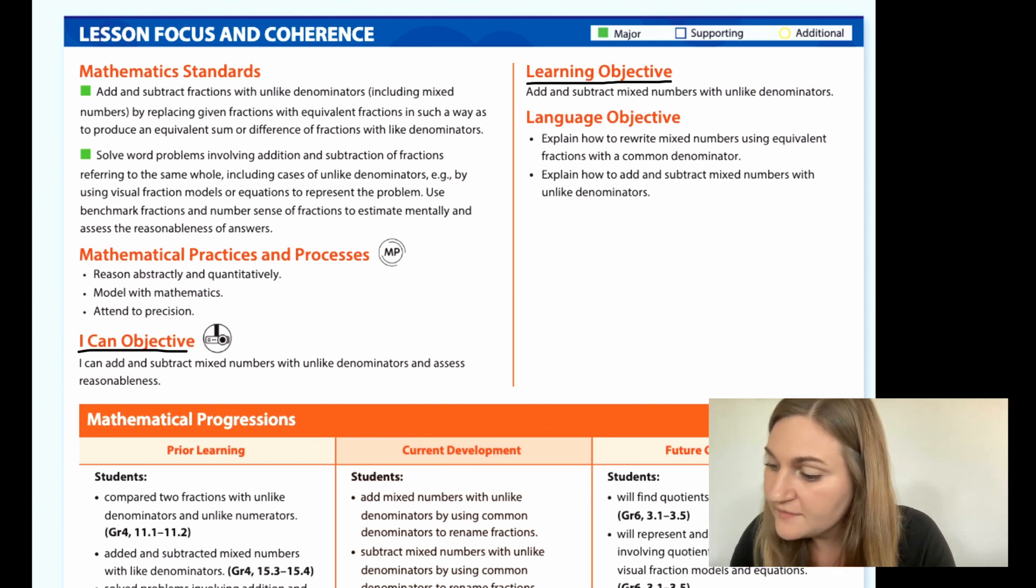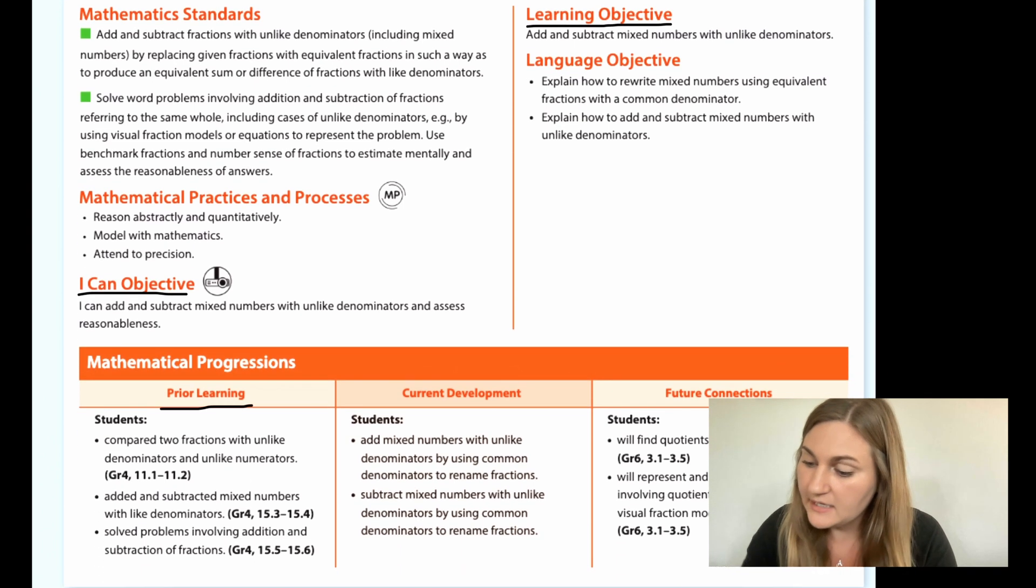The Learning Objective says add and subtract mixed numbers with unlike denominators, and the prior learning is that students compared two fractions with unlike denominators and unlike numerators, students added and subtracted mixed numbers with like denominators, and students solved problems involving addition and subtraction of fractions.